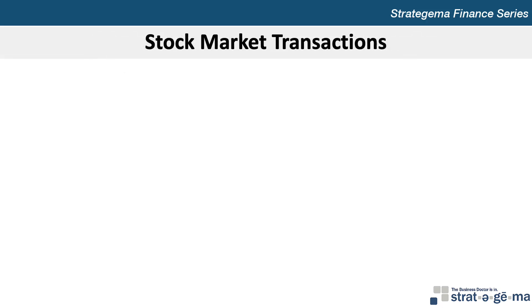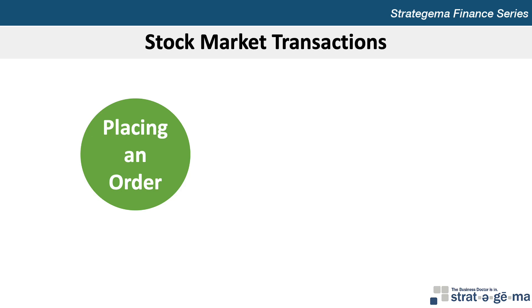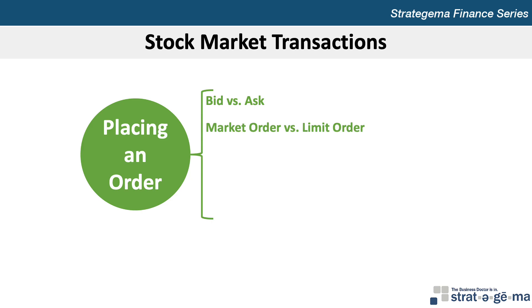To place an order to buy or sell a specific stock, an investor contacts a brokerage firm, which serves as the intermediary between buyers and sellers of stocks in the secondary market. The broker may provide a bid quote if the investor wants to sell, or an ask quote if the investor wants to buy. The investor specifies the stock name, whether to buy or sell, the number of shares, and whether the order is a market or limit order. A market order executes at the best possible price, whereas a limit order places a limit on the price. A stop-loss order is a type of limit order where the investor specifies a selling price below the current market price, becoming a market order only if the stock price drops to that level. Investors generally place stop-loss orders to protect gains or limit losses.